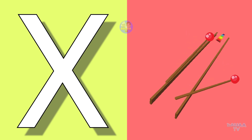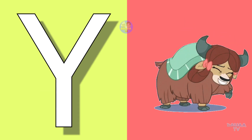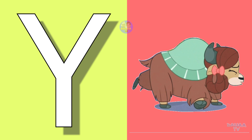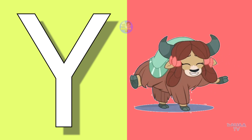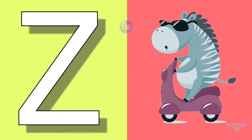X for xylophone, xylophone means swartaran. Y for yak, yak means yak. Z for zebra, zebra means zebra.